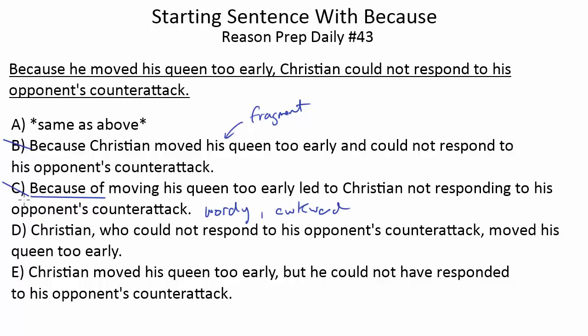Let's look at D and E. Most likely if you picked something other than A, you probably went with D or E. Choice D reads: 'Christian, who could not respond to his opponent's counter-attack, moved his queen too early.' This one is grammatically okay — there's no fragment issue and we don't start with because. But what's wrong is it's no longer saying what the original sentence is trying to say. When making a correction, you want to preserve the original meaning as much as possible. In the original, there's a cause and effect: because he moved his queen too early, he couldn't respond to the counter-attack. In D, the causal arrow is reversed — it seems like because he couldn't respond, he moved his queen too early. So D changes the meaning and is not a proper revision.